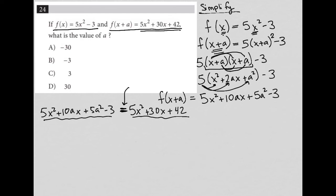The x² terms: I have 5x² on the left and 5x² on the right, so those are equivalent. On the left, I have 10ax. On the right, I have 30x. So in order for those two terms to be equivalent, 10ax must equal 30x.